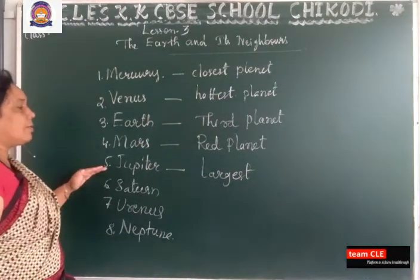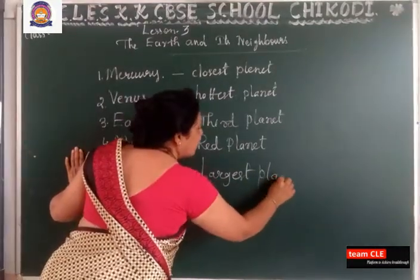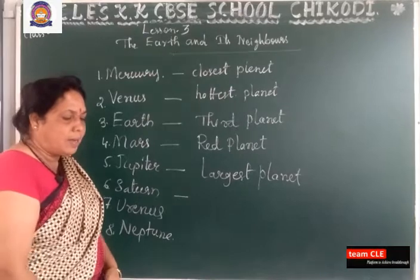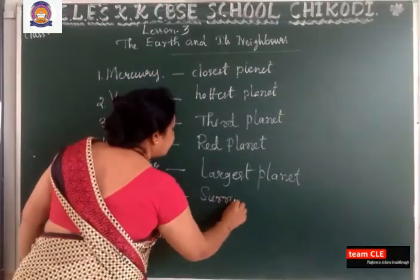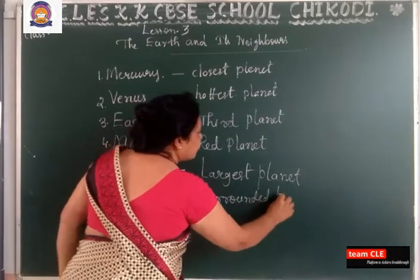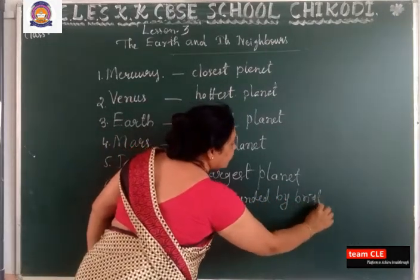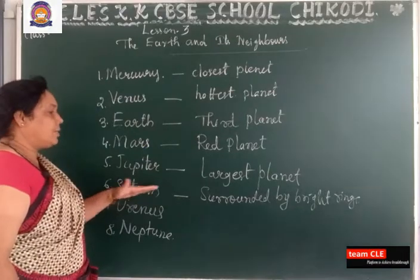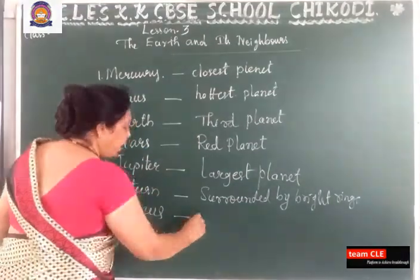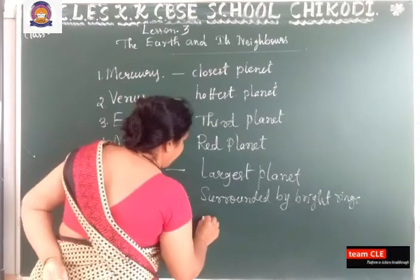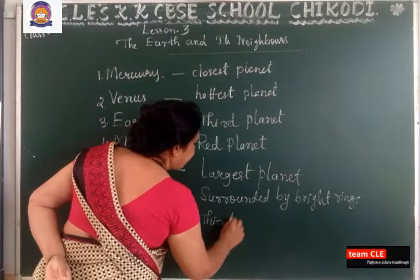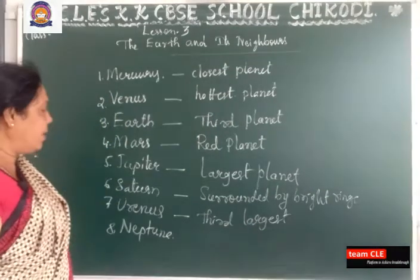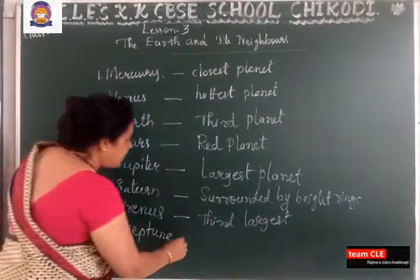Jupiter is the largest planet in the solar system. Saturn is surrounded by bright rings. Uranus is the third largest planet. Neptune is the 8th planet in the solar system.